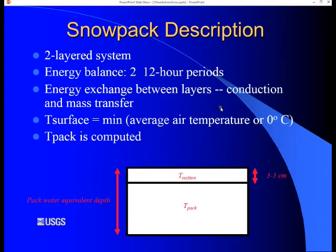In PRMS we model the snowpack as a two-layered system. Since PRMS runs on a daily time step, we divide the day into two 12-hour periods, basically night and day, the warm period and the cold period. The snowpack exchanges heat between the two layers and also mass, basically in the form of liquid water, moves down through the top to the bottom. The temperature of this surface layer is based on the air temperature, either the air temperature or zero if the air temperature is above zero.